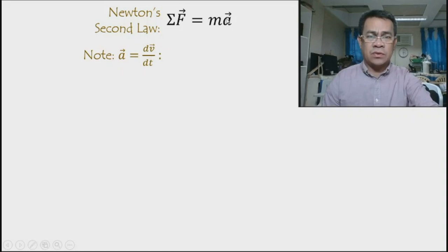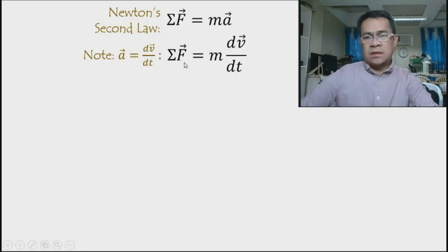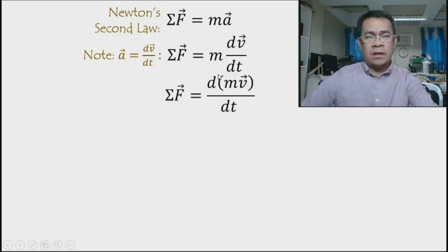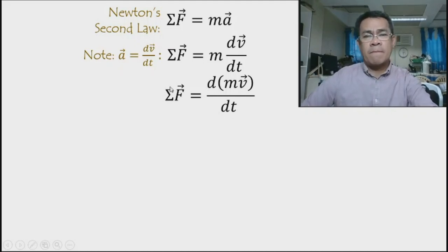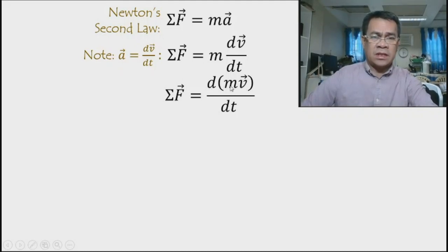If we replace acceleration in Newton's equation, the net external force equals mass times the change in velocity per time interval. Transforming this so that m is inside the derivative, we get that the derivative of mass times velocity with respect to time is equal to the net external force.